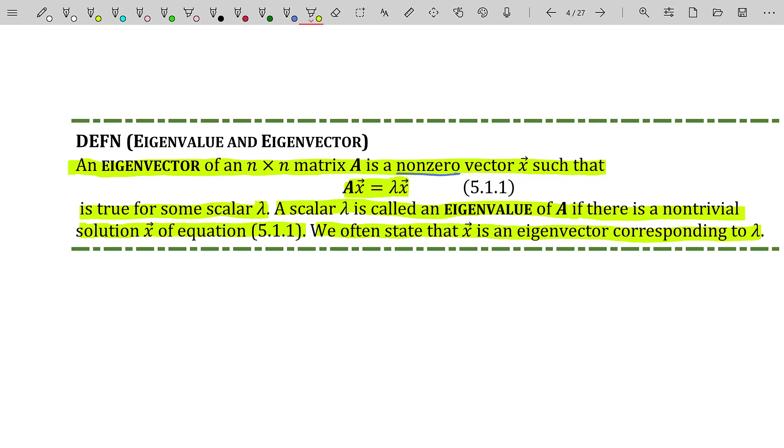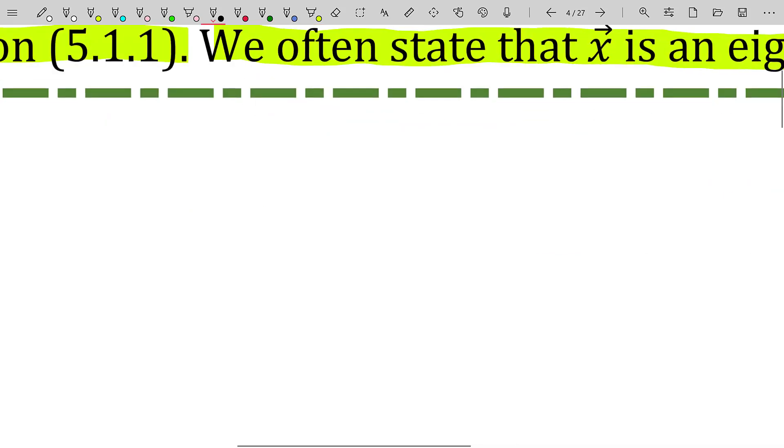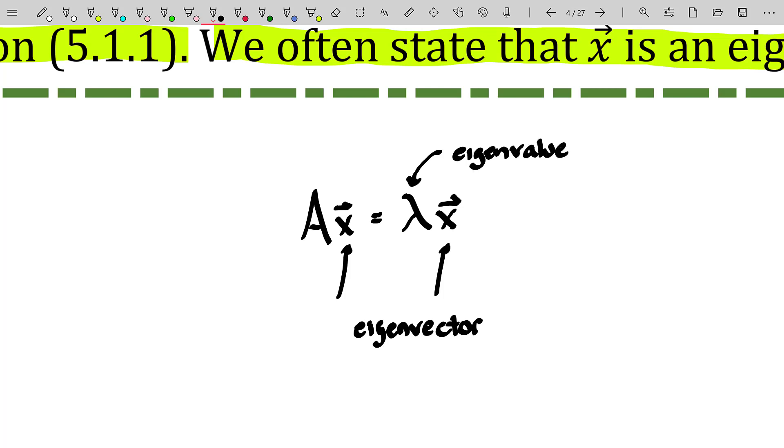Believe it or not, these are incredibly important as you move forward, at least in linear algebra and differential equations. Before I leave this page, I just want to make sure that you're with me 100%. If a matrix times a vector ends up being a scalar multiple of that vector, then the vector itself is called the eigenvector or an eigenvector associated with the eigenvalue lambda. And it's very rare if ever that we've seen this up to this point in linear algebra. So this should feel like a first time topic.